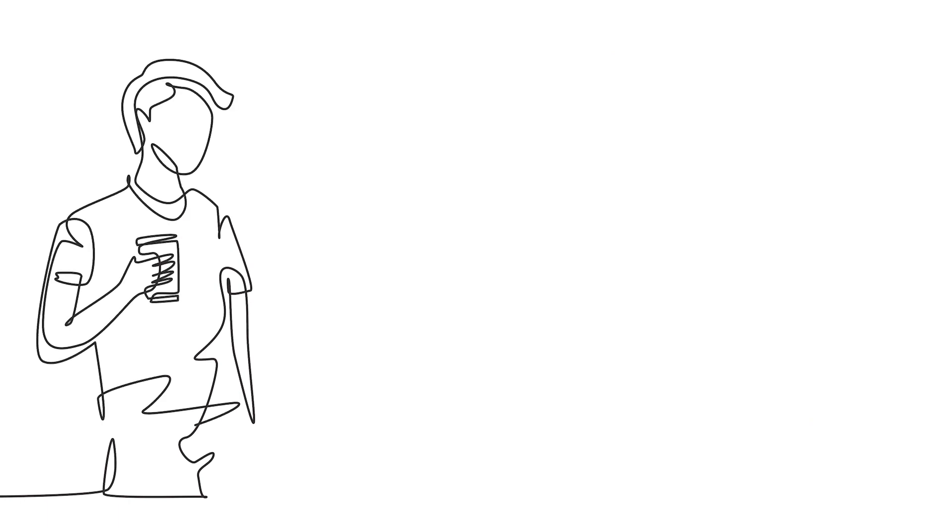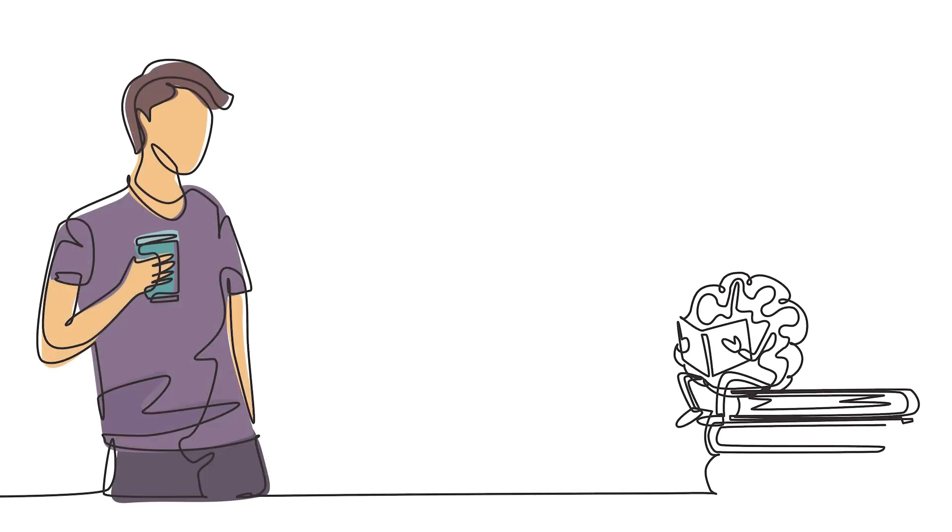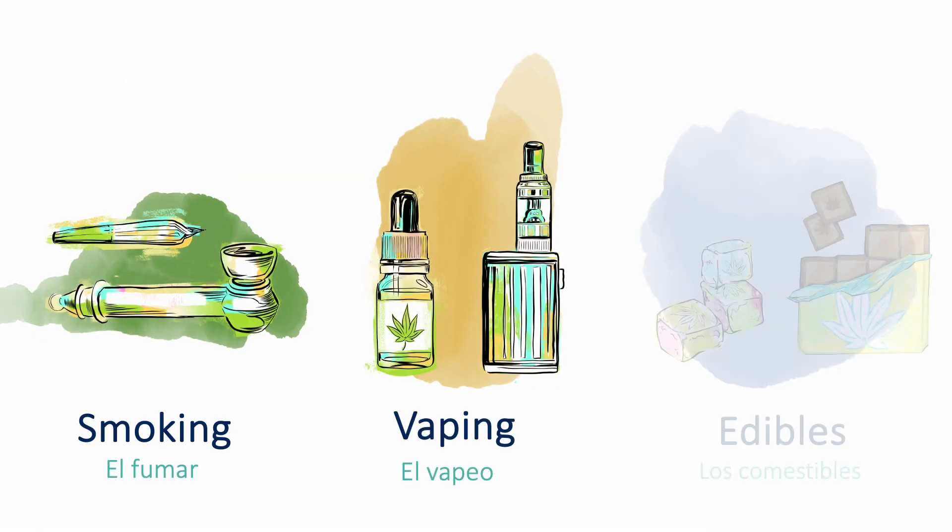For young people and teenagers, it is important to know that adding external substances affects your developing brain and body. If someone does choose to use cannabis, remember each method affects you slightly differently.